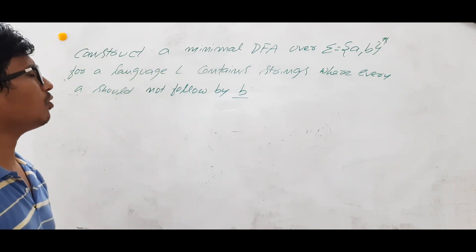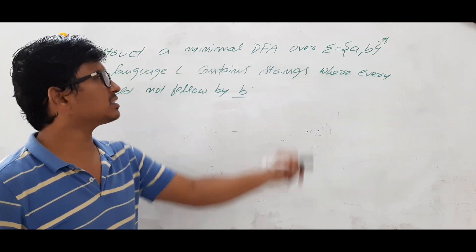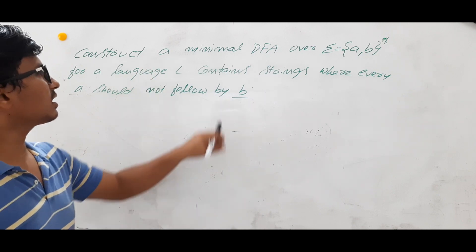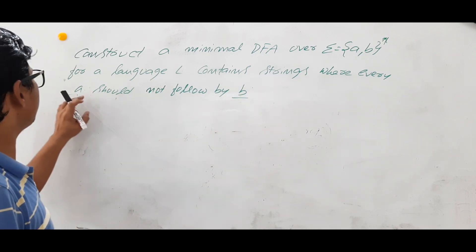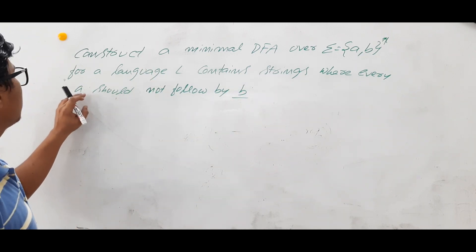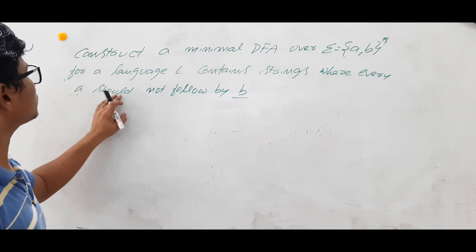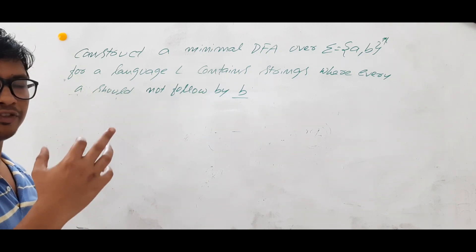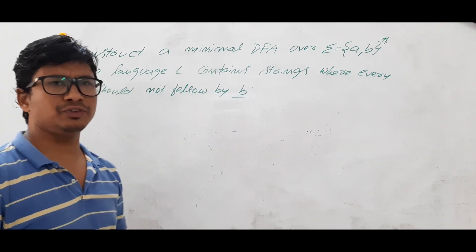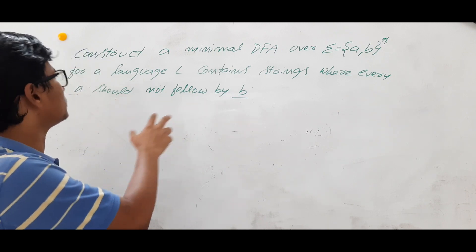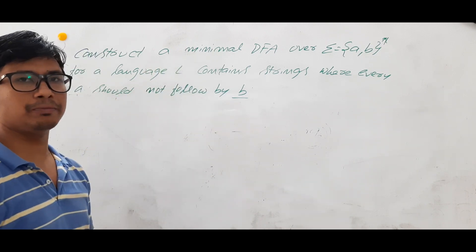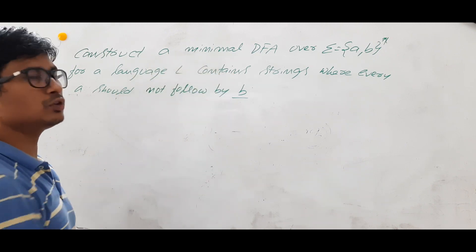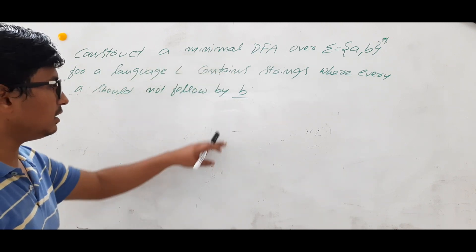Construct a minimal DFA over alphabets A and B for a language L containing strings where in every string, A should not be followed by B. If you saw the previous video, we discussed the opposite — where A should be followed by B. Here, we have taken the example where A should not be followed by B.